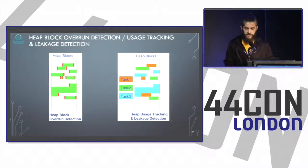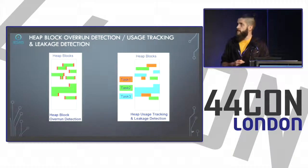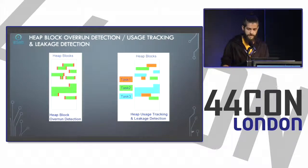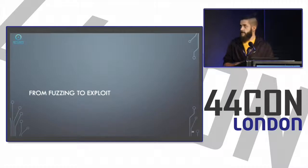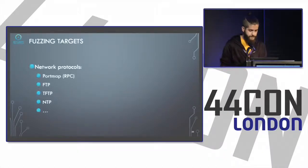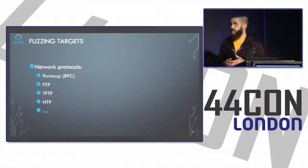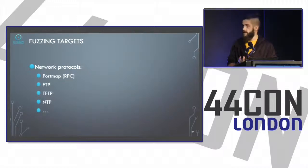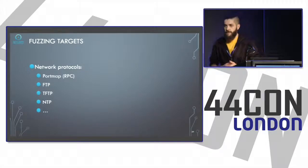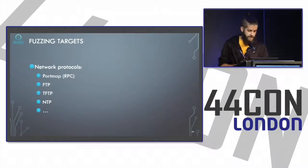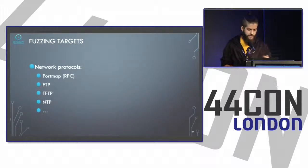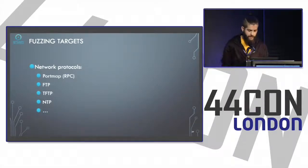Now I will talk about our main work — from fuzzing to exploit. We did this project because a customer asked us to do a penetration test on VxWorks 5 and 6. They provided pre-configured OS images and tools with several network protocols activated: portmap, FTP, TFTP, NTP, and others.